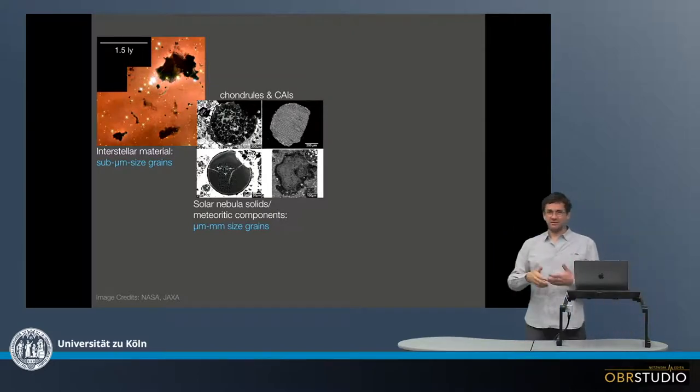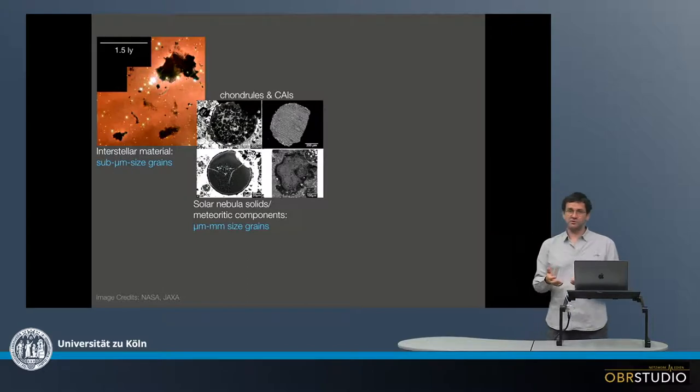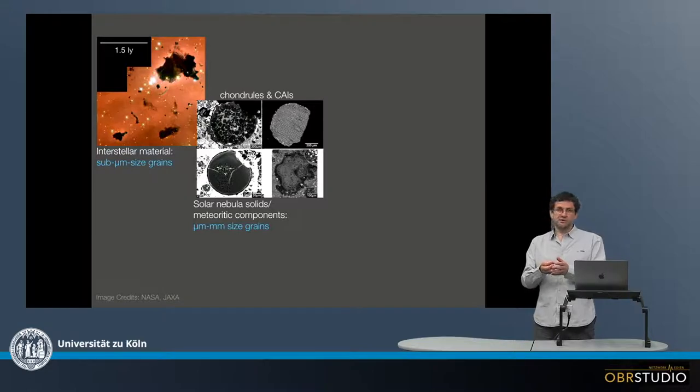It is yet unclear how this transformation really worked. For the chondrules, we assume that the interstellar material formed aggregates that served as the precursors for the chondrules.